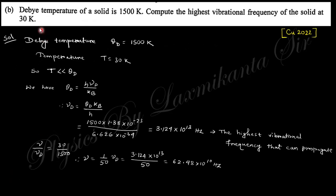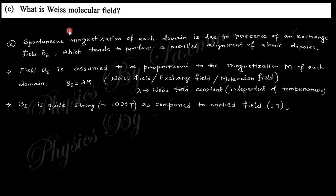Next question: Debye temperature of a solid is given as 1500 Kelvin. Compute the highest vibrational frequency of the solid at 30 Kelvin. You know this relation: theta_d is like that, so nu_d, that is the frequency, will be like that. Put this value and you'll obtain this expression. The highest vibrational frequency that can be propagated—this is the highest vibrational frequency. Use 30 Kelvin and you will get the value of nu, this is the frequency which will be propagated.